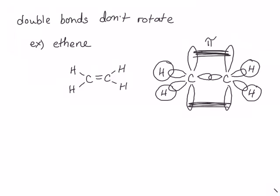Rotation about the axis through the two carbon atoms would break this overlap, and therefore break the pi bond. Therefore, double bonds cannot rotate about the axis between the two atoms.